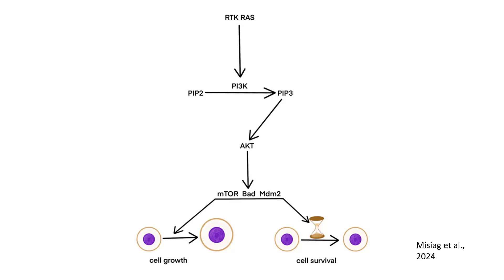PI3K activates AKT, a serine/threonine kinase that functions as the central regulator of the pathway. AKT phosphorylates multiple downstream targets which drive cell growth and survival. AKT activates mTOR, a critical regulator of protein synthesis and cell growth, which drives the expansion of melanoma cells.